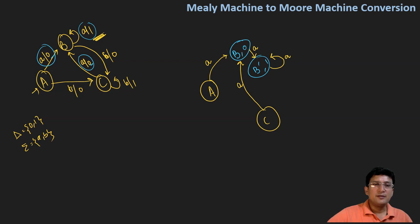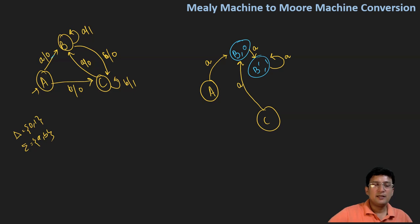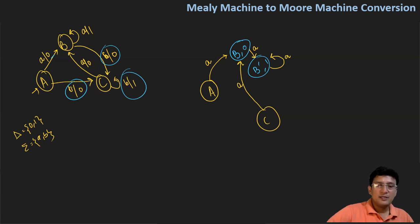Now let's check the C state and mark the transitions coming to C. One transition is producing output zero, one is producing output zero, but one transition is producing output one. So let's make two states in C — one which produces output zero, and one C dash which produces output one.